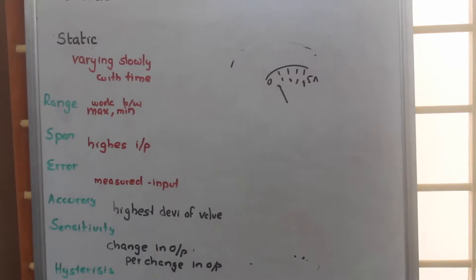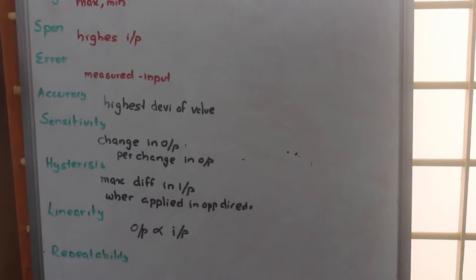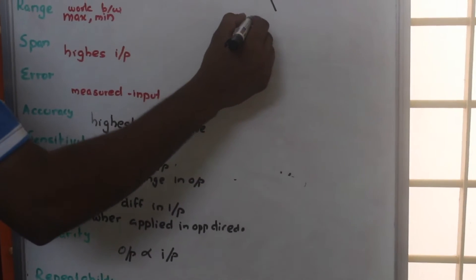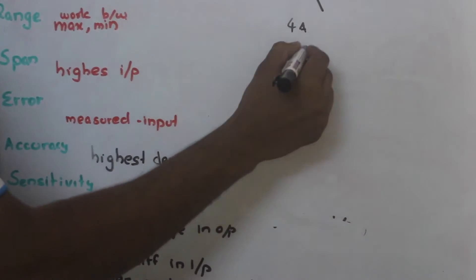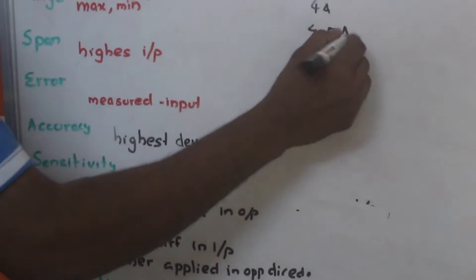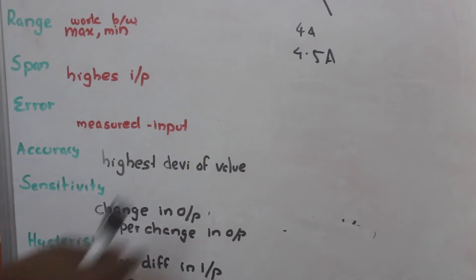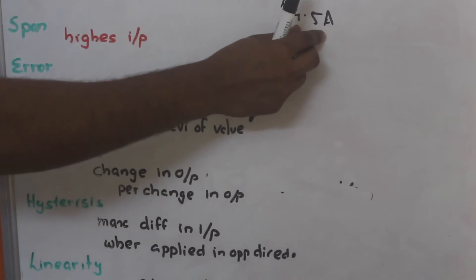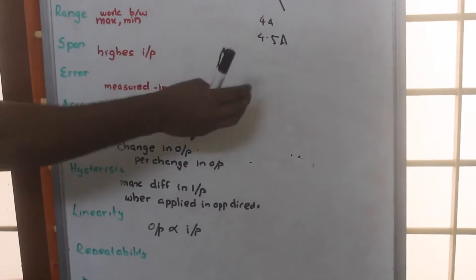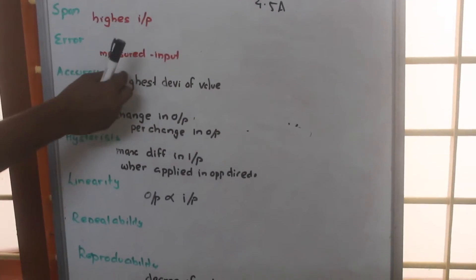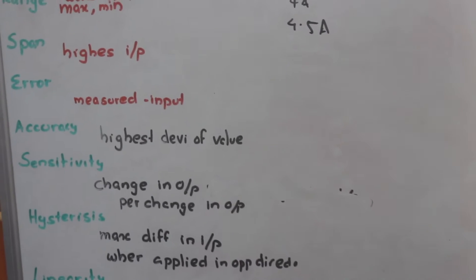Now accuracy. Error. Error means even though in a circuit the actual current will be some 4 ampere, but we will be getting a measurement of 4.5 ampere. That means that 0.5 is an error. So 0.5 is the difference between the measured value and the actual input value. That is what we call as error.